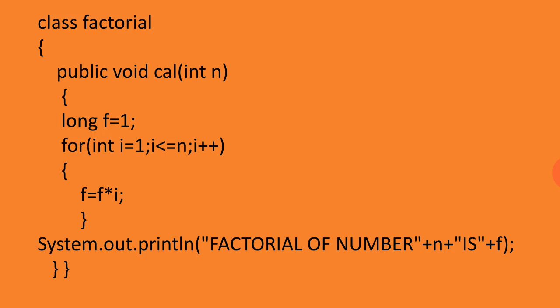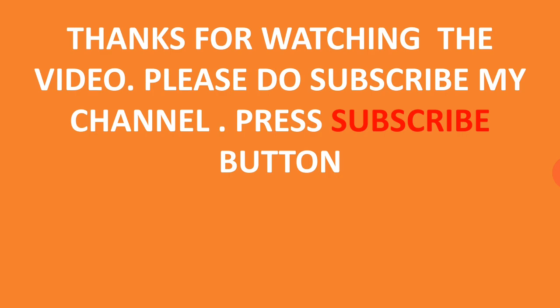Then 24×5 will produce 120. Finally when this process is over, we print the factorial of the number. The statement will be: factorial of the number n is f. Thanks for watching the video, please subscribe my channel, press subscribe button, thank you.